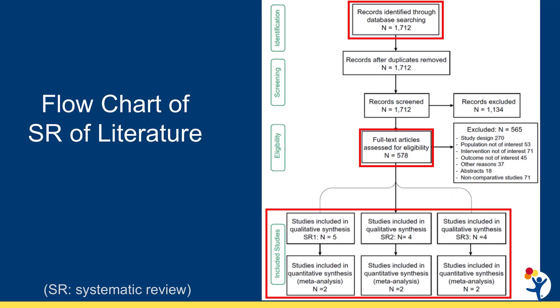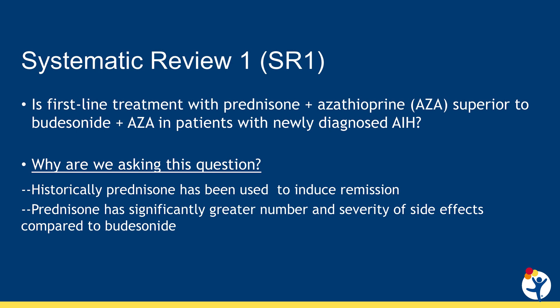Shown here is the complete systematic review data for all three systematic reviews. The initial search of the database identified over 1,700 studies. Of these, 578 full-text articles were assessed for eligibility, and the vast majority were excluded due to multiple concerns such as study design. This resulted in only a few studies for qualitative or quantitative synthesis analyses. In the first systematic review, we asked the question: is first-line treatment with prednisone plus azathioprine superior to budesonide plus azathioprine in the patient with newly diagnosed autoimmune hepatitis?